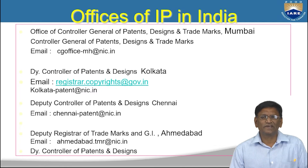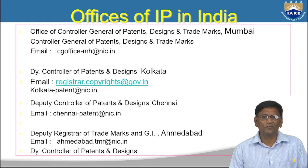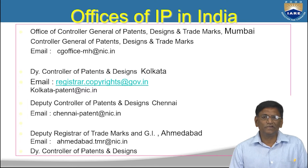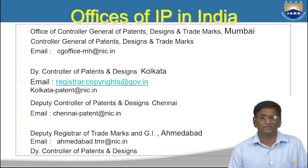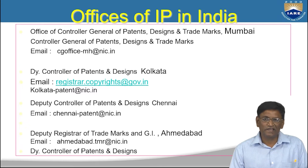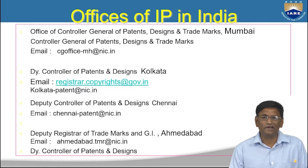The head office of the Controller General of Patents is located in Mumbai. Deputy controller offices are in Kolkata, Chennai, and Ahmedabad. We typically file either in Chennai or Kolkata. Their email addresses and website — IP India — are listed in the slides, so you can access and review their activities.